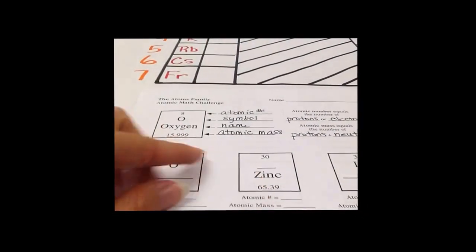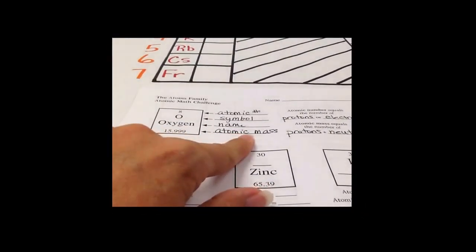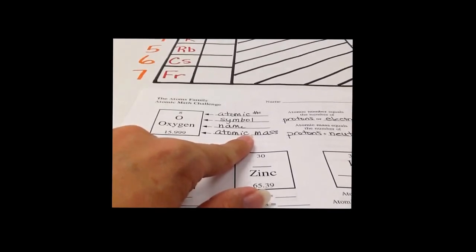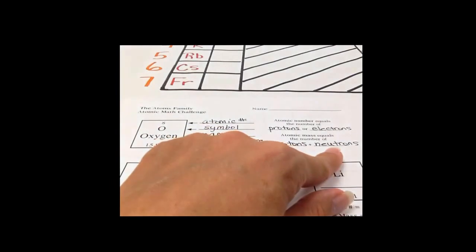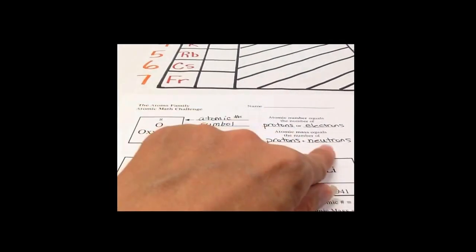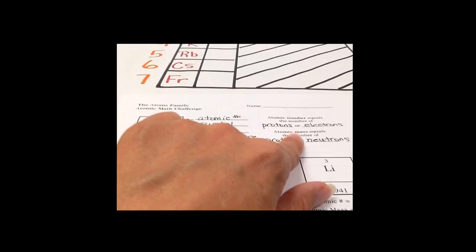So your atomic mass is equal to your protons plus your neutrons. Think about it. Most of the mass of an atom is located in the nucleus. Well, what is in the nucleus? Your protons and neutrons. Therefore, protons plus neutrons equals atomic mass.